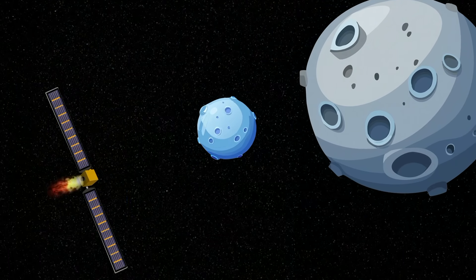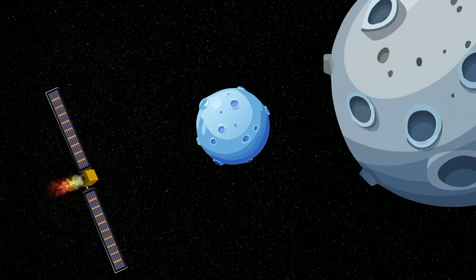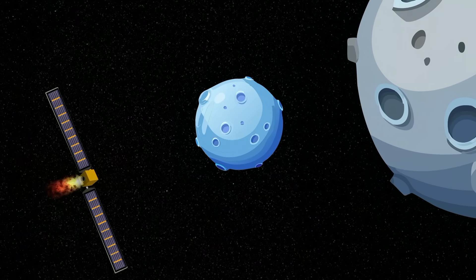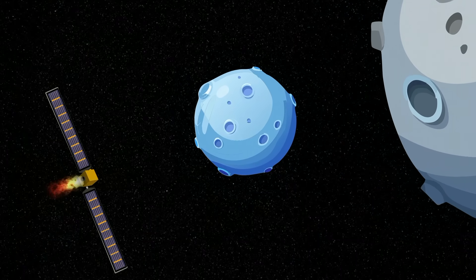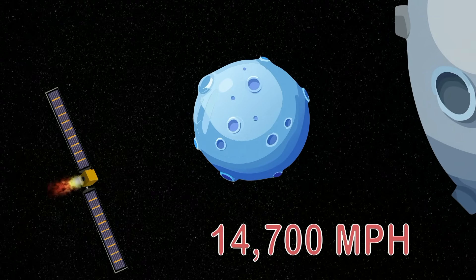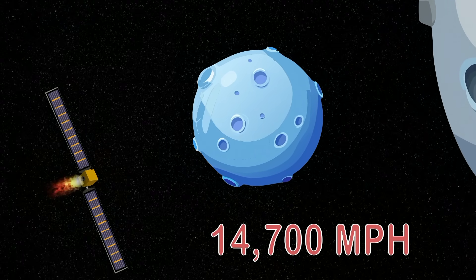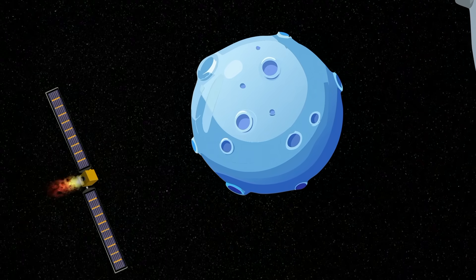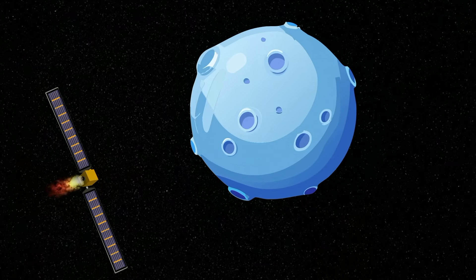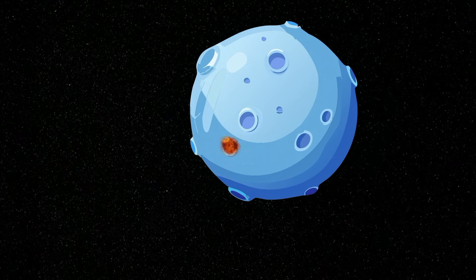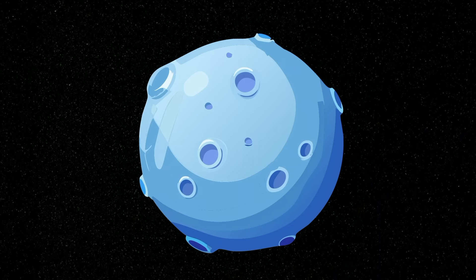The speed and weight of the DART satellite flew toward me with amazing speed using kinetic energy, that's right. 14,700 miles per hour was DART's speed before its impact on my surface, changing my orbital speed. When the impact occurred, it was brought with such might, with 1,340 pounds hitting my surface with a bite.